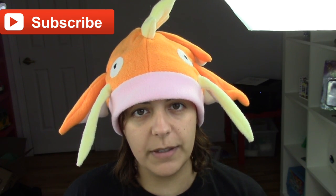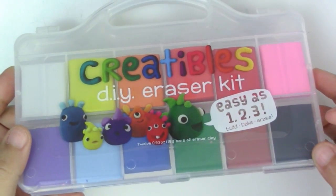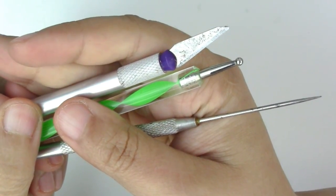All the dweeps are doing it. Here's what you'll need for this project: eraser clay kit, I got this off of Amazon, rounded pointy tools, and a cutter.